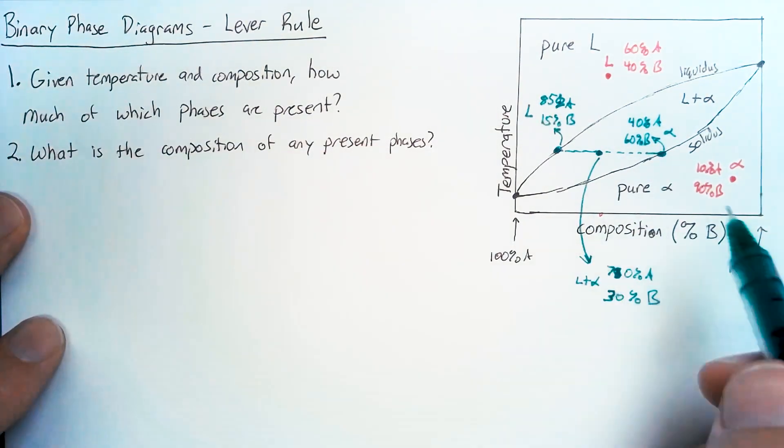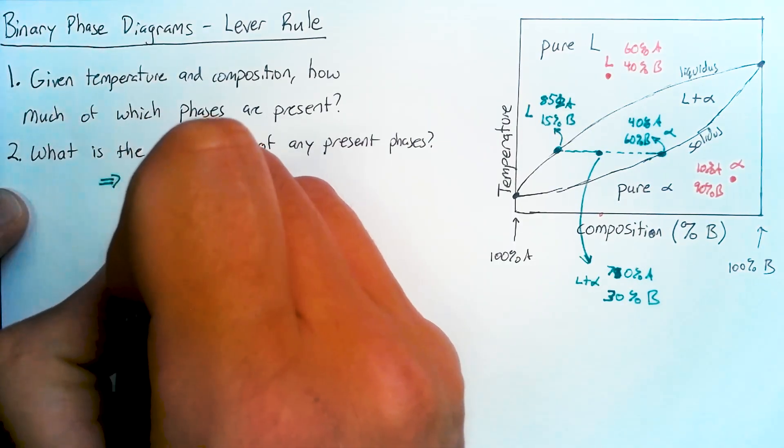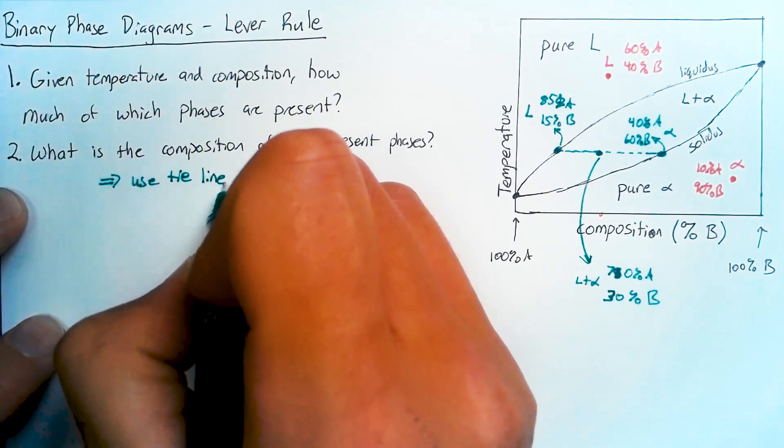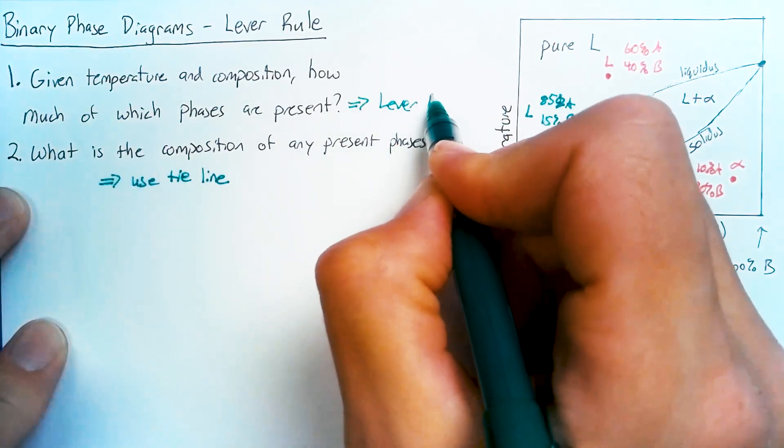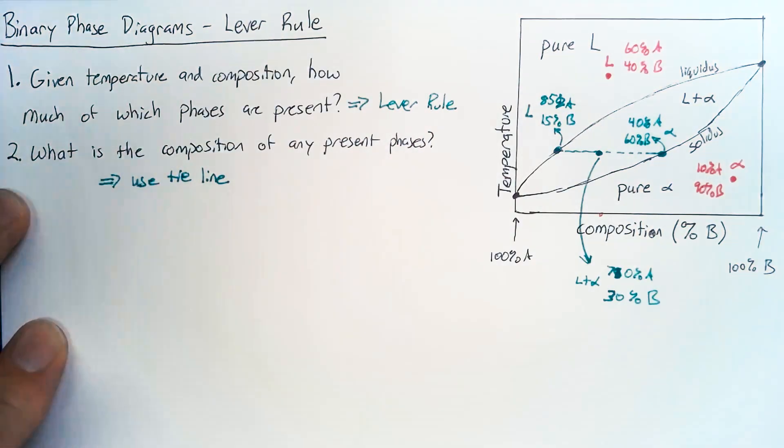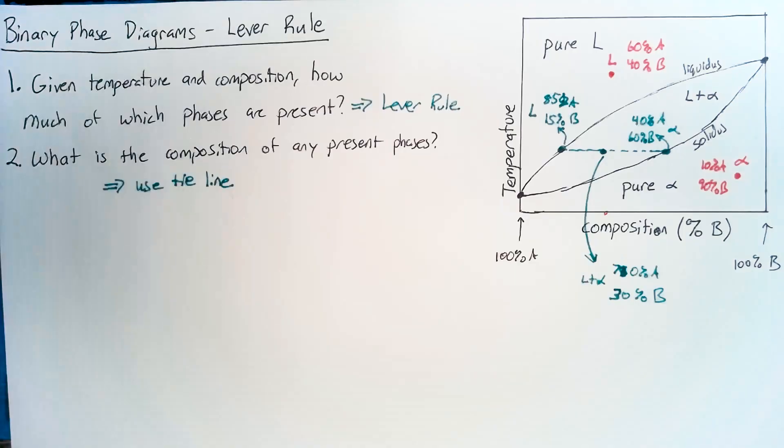So how do we answer number two in these more complicated questions? Well, we're going to use the tie line. Now to figure out how much of those phases are present, we're going to use the lever rule. But before we get there, let's go ahead and look at the base principles that we'll use in order to come up with this lever rule.